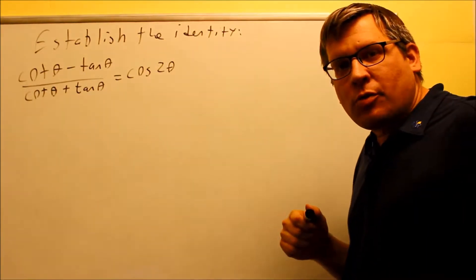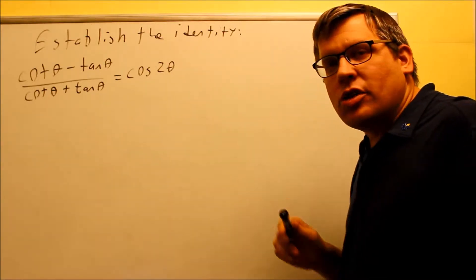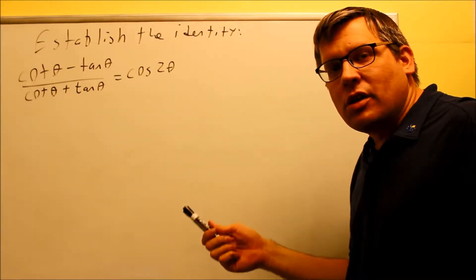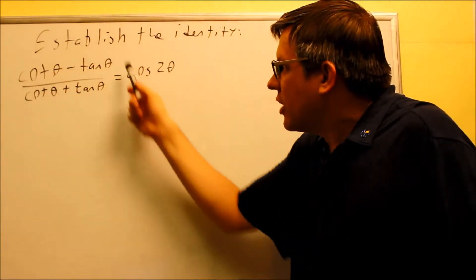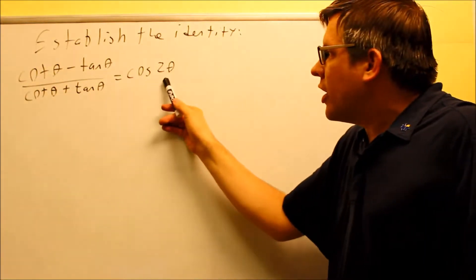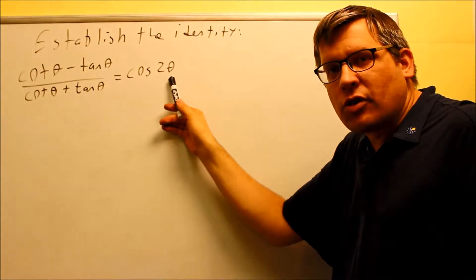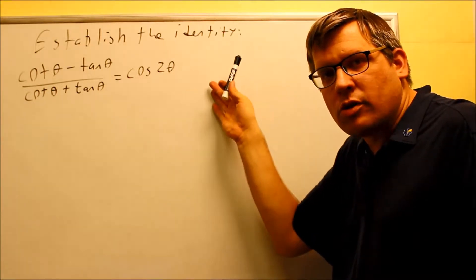Now if we take a look at the strategies we've talked about in previous problems when we establish identity, one of the first strategies would be change everything into sines and cosines. So I'm going to start with the left hand side. I definitely don't want to start with the right hand side because there's three different identities for cosine 2θ, so I wouldn't know which one to put in.